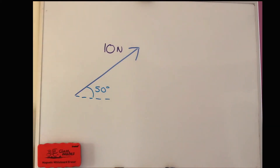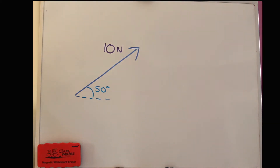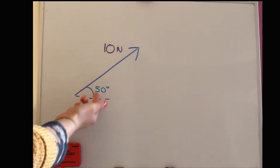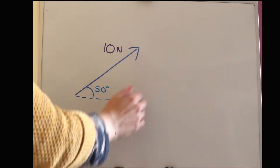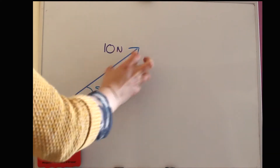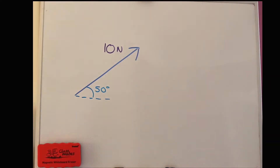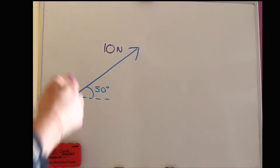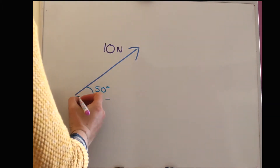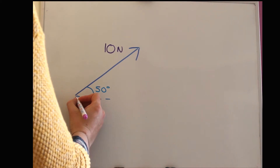A vector can be written in component form using either a column vector or i's and j's, and that's very useful when you're working with vectors. What we're going to do today is resolve vectors — which means if you're given the magnitude and direction, find out what the components are. So we break this into the vertical and horizontal components using basic trigonometry, and we'll practice a couple of these before looking at anything more complicated.